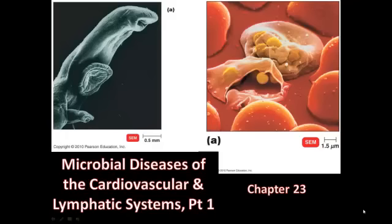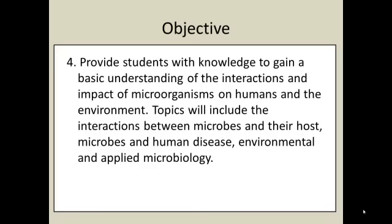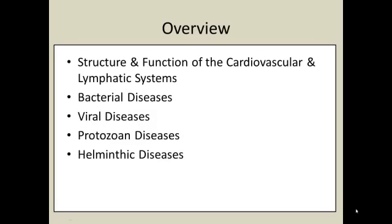Welcome to Chapter 23, Microbial Diseases of the Cardiovascular and Lymphatic Systems, Part 1. This chapter fulfills Objective number 4. In Part 1, we're going to cover the structure and function of the cardiovascular and lymphatic systems and bacterial diseases up to bubonic plague. In Part 2, we'll pick up Lyme disease, then viral, protozoan, and helminthic diseases.